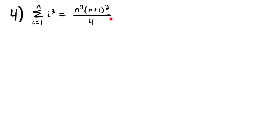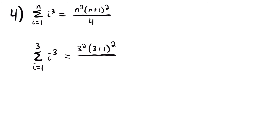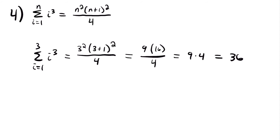Here's our fourth and final summation formula: the sum from i equals 1 to n of i cubed equals n squared times n plus 1 squared divided by 4. We looked at sums for i to the first power, then i squared, now i cubed. For the sum from i equals 1 to 3 of i cubed, with n equals 3: 3 squared times 3 plus 1 squared divided by 4, which is 9 times 4 squared divided by 4, giving 9 times 16 divided by 4, and 16 divided by 4 is 4, so 9 times 4 equals 36.